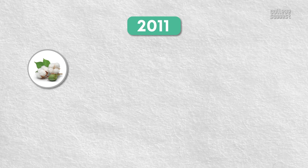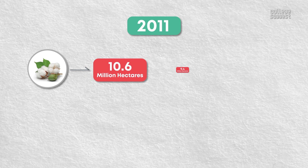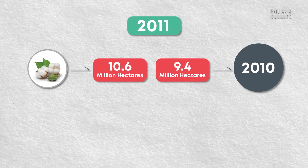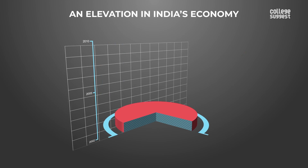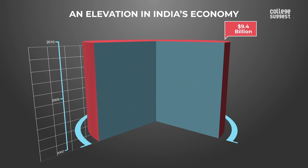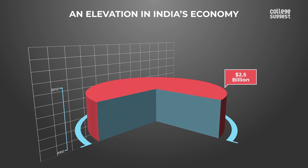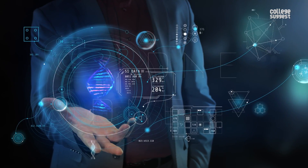The year 2011 bore testament to pest-resistant Bt cotton proliferation, cultivated across 10.6 million hectares from 9.4 million hectares in 2010. This phenomenon was analyzed by economists Graham Brooks and Peter Barfoot, who inferred an elevation in India's economy by $9.4 billion from 2002 to 2010, with $2.5 billion in 2010 alone contributed by the burgeoning Bt cotton. Genetic engineering is inevitable in enhancing the quality of human life.